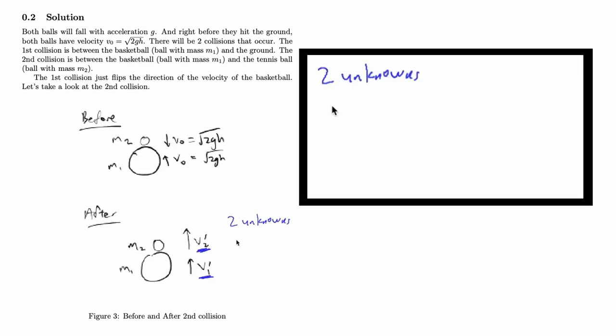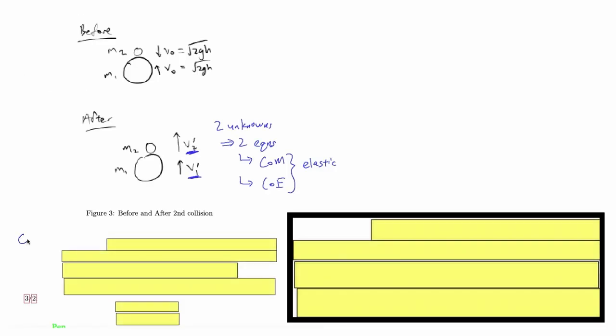Because we have two unknowns, that implies that we need two equations and these two equations are going to be our conservation of momentum and conservation of energy. We can use these two principles because we know that the collision is elastic.